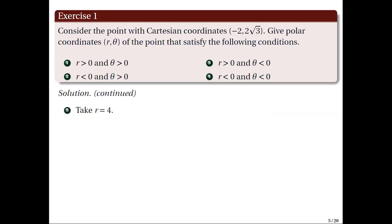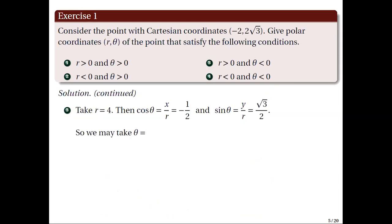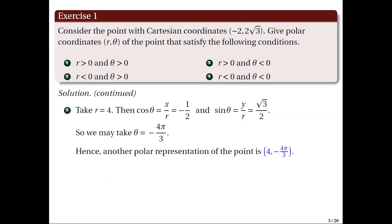For the third case, we can take r equal to 4. Solving the trigonometric equations, we have cosine theta equal to negative one half and sine theta equal to square root of 3 over 2. From these, we can take theta equal to negative 4 pi over 3, which gives us another polar representation of the point: (4, -4π/3).